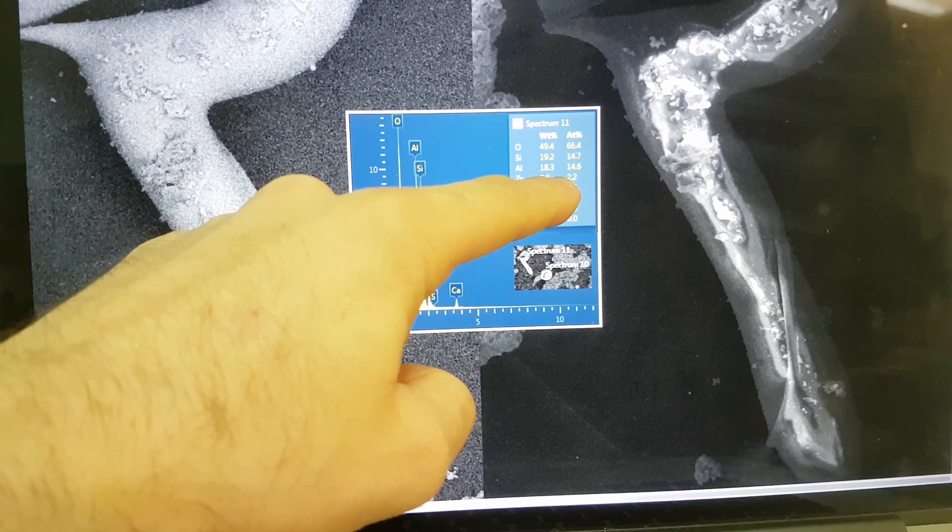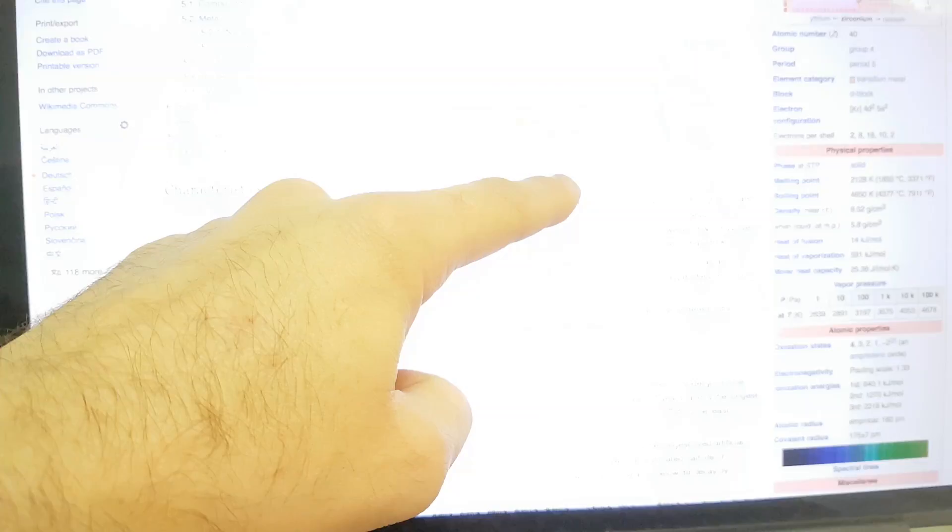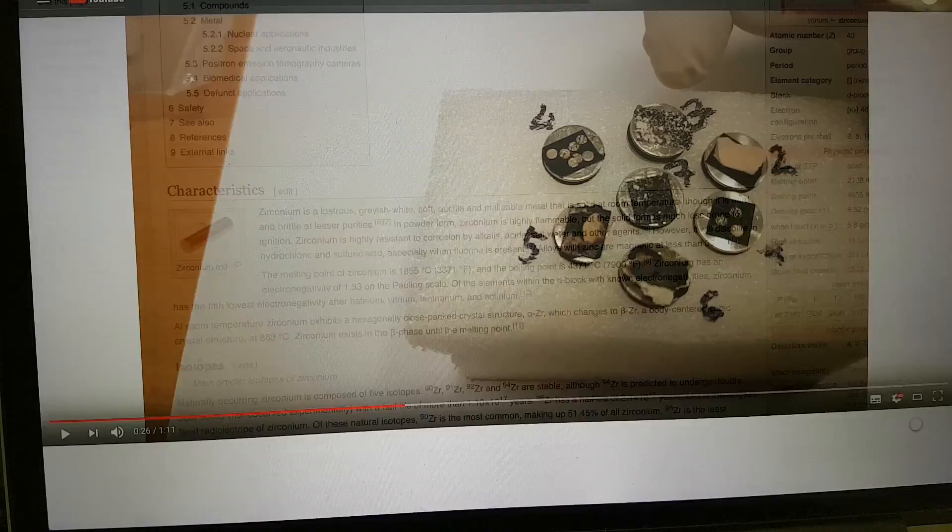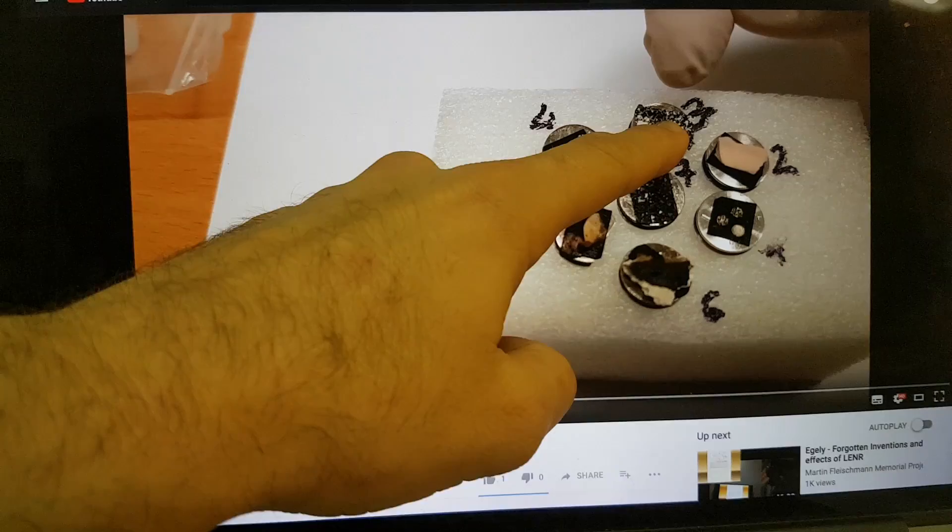The interesting thing about zirconium, well, there's many interesting things, but it has a very high melting point, 2,128 degrees C. So how is this getting in here into this non-magnetic group here? So this is our zirconium, and we also have some close-up here.